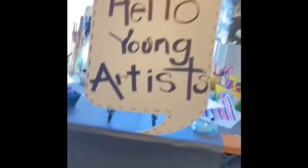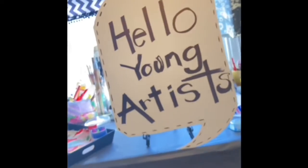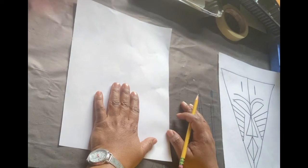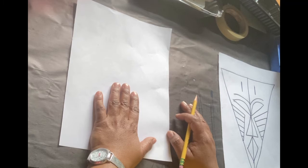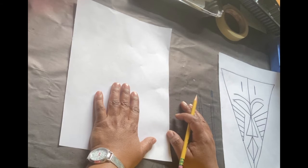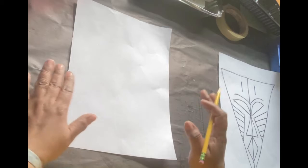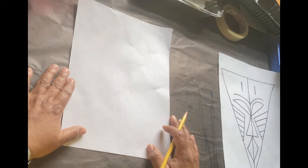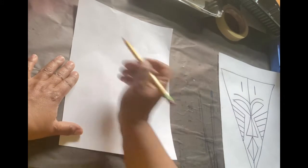Hello young artists. We are going to make an African inspired mask connecting with Black History Month for February. We're going to make our mask out of the basic shape of a triangle.